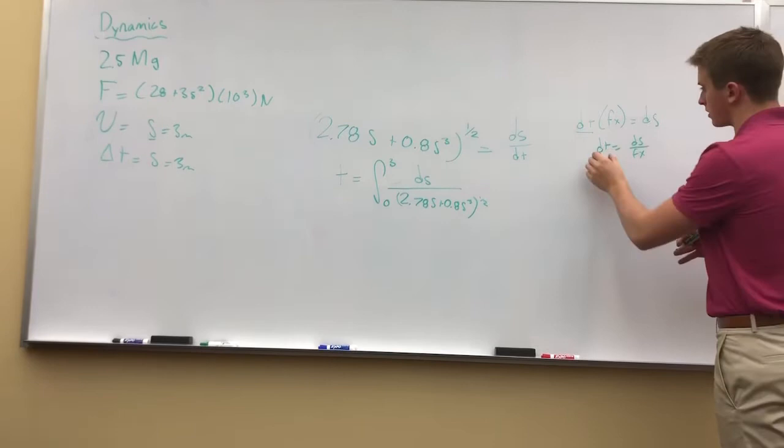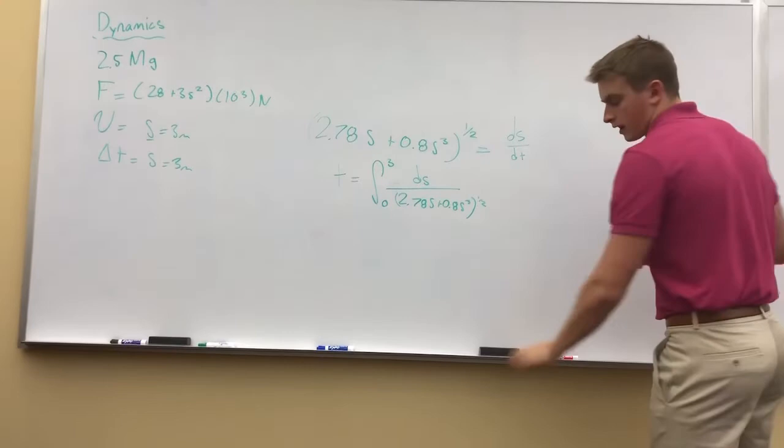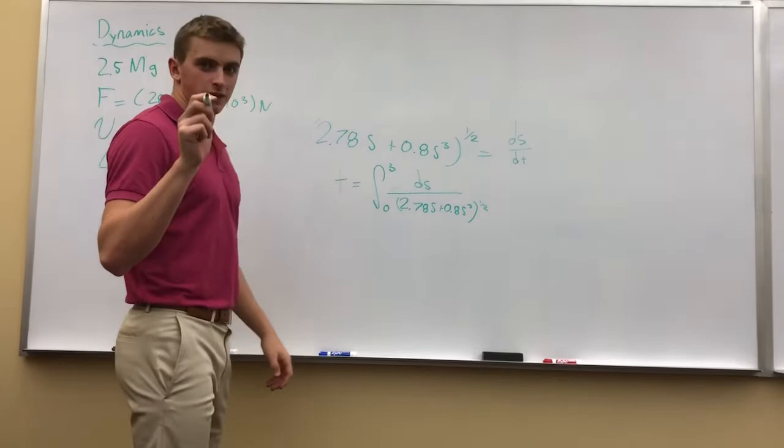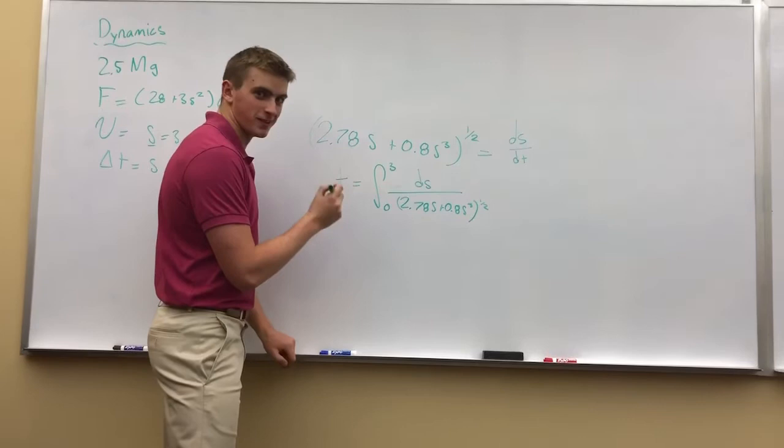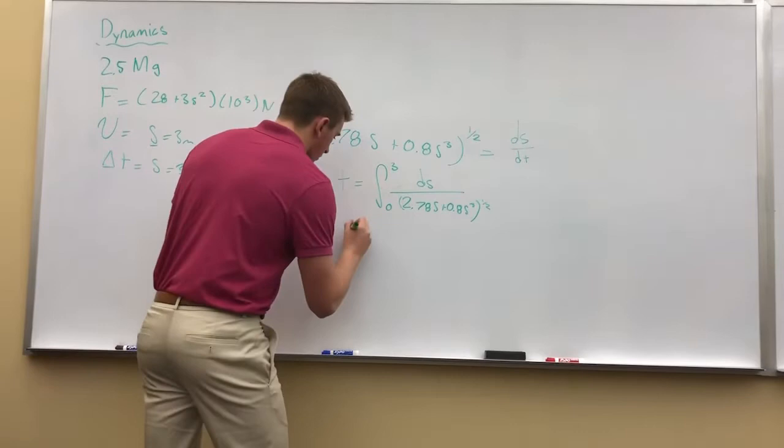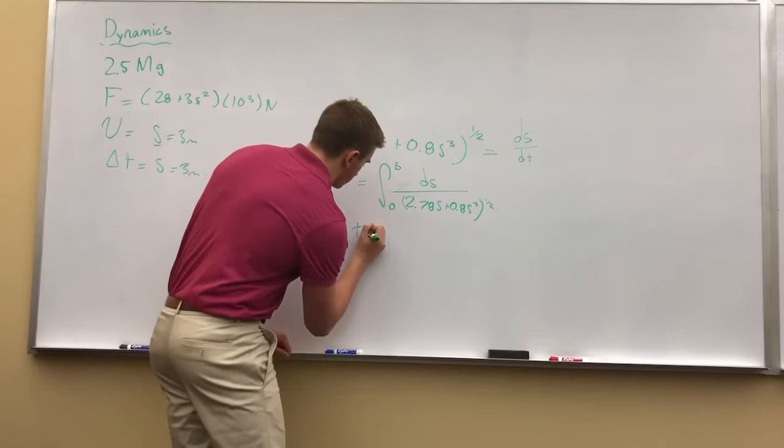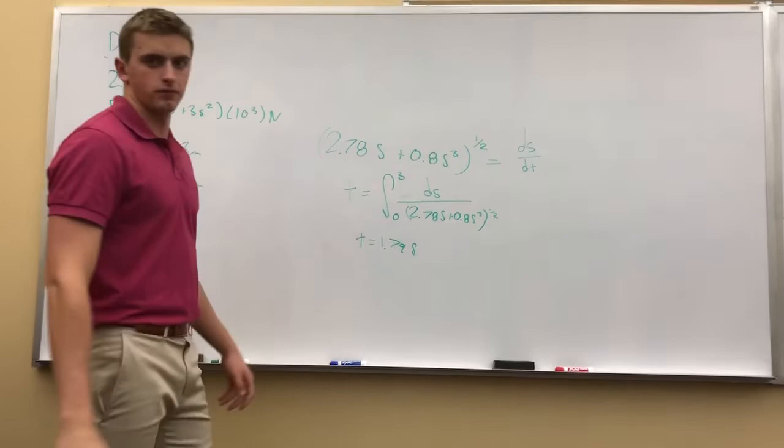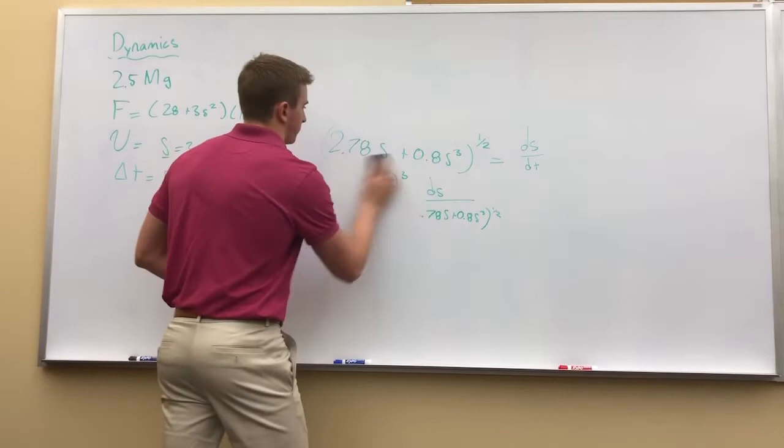So if you plug this in your calculator, which you can do definite integrals in your calculators. Don't tell your teachers I told you that a TI-84 plus will do definite integrals if you know what you're doing and you spend a lot of time looking around it. Once you integrate this, we're going to find that time between 0 and 3 meters is going to be 1.79 seconds. That's our time. We're going to do one more example real quick. It's a quick one. It's really not that bad. Like, really not that bad.